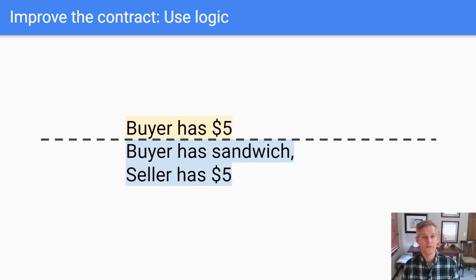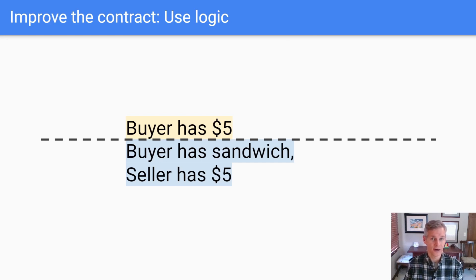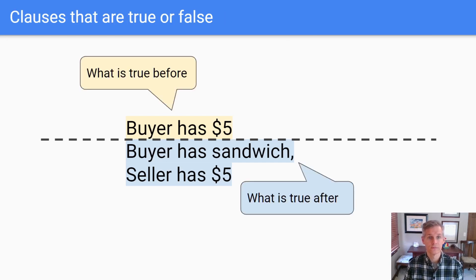So far, we've been too casual with the phrasing of our contract — it's been using an action verb, 'give.' It's time to change that. Let's write a contract that's easy to think about using logic. As it turns out, it's easier to think about contracts using logic than it is using procedures. So to improve this contract, we need to decide what must be true before and after, and we can think about that logically.